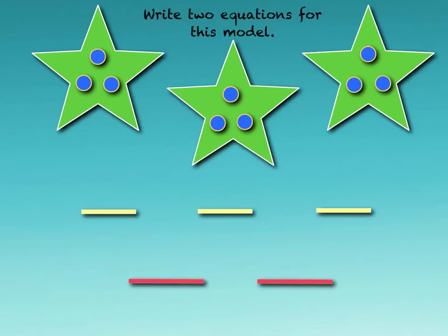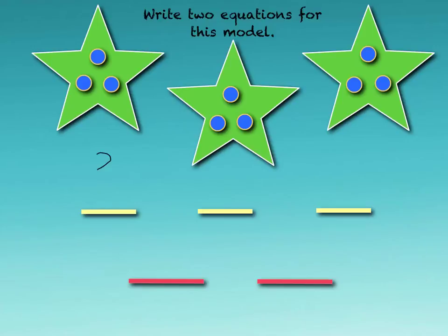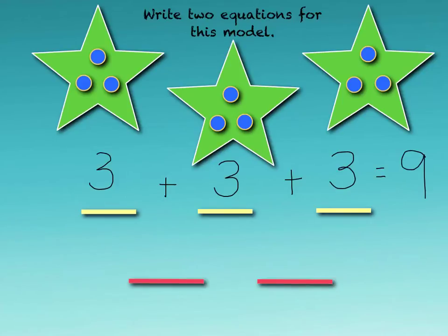Since our objective was to write addition and multiplication sentences for different models, let's look at another one. This model has three groups, and in each group there are three objects. Our repeated addition sentence would be three plus three plus three, because there are three objects in each group, and that gives me a total of nine circles. I can skip count — three, six, nine — to find my answer.